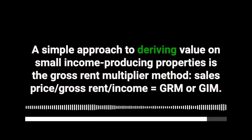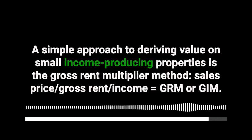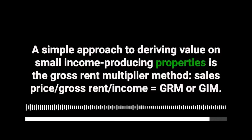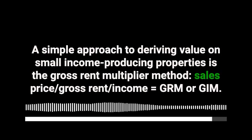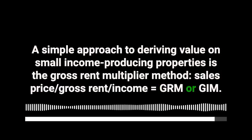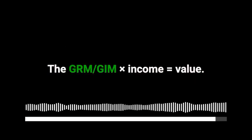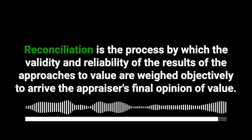A simple approach to deriving value on small income-producing properties is the gross rent multiplier method. Sales price divided by gross rent income equals GRM. GRM times income equals value.